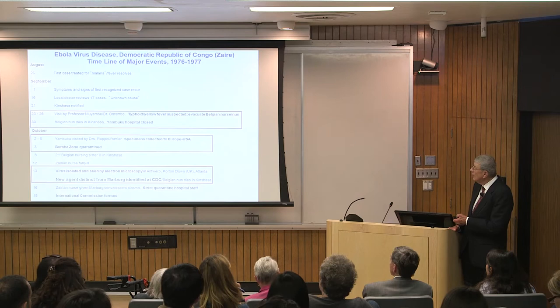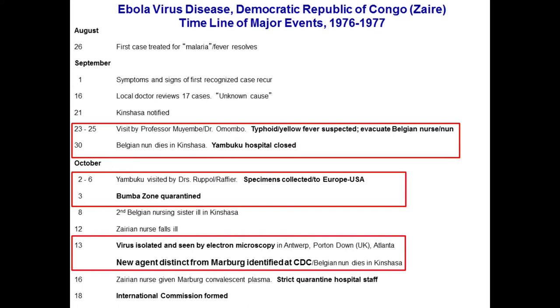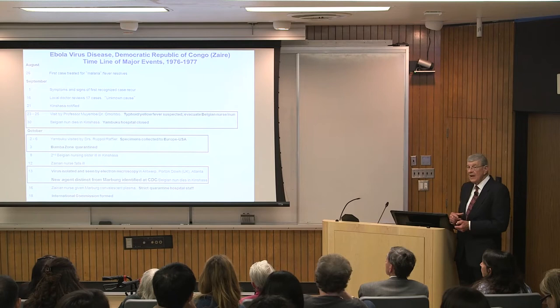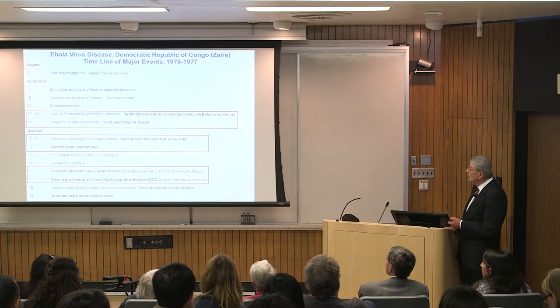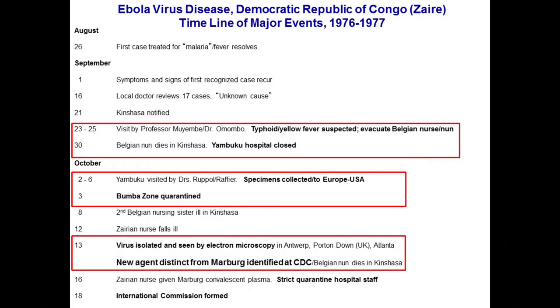They had seen it under the electron microscope and cultured it. The first patient had presented to this isolated rural hospital in northern Zaire with fever, chills, and headache — they thought it was malaria and gave an injection of chloroquine. The fever went down a little, but a week later, a rip-roaring syndrome of hemorrhagic fever began.